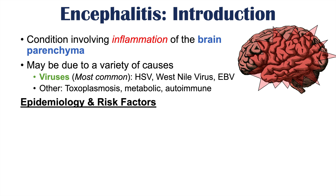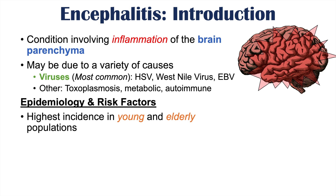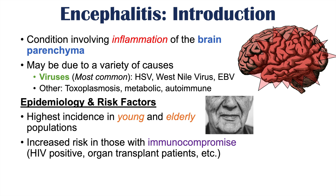The highest incidence of encephalitis occurs in the young and elderly populations — so often extremes of age. There is also an increased risk in patients who are immunocompromised, meaning those with issues with their immune system functioning. These include HIV positive patients, AIDS patients, organ transplant patients, and others, who are at increased risk for infections in general and for encephalitis from infective causes.